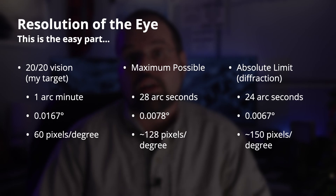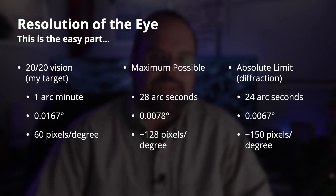20/20 vision — 60 pixels per degree — is not the upper limit; that's a normal visual level. Scientists and doctors have measured using laser interferometry that the best possible human vision is around 28 arc seconds — I'll round to 30 arc seconds. An arc second is a 60th of an arc minute, or 1/3600th of a degree. 30 arc seconds is half an arc minute. Translating to pixels per degree, that comes out to about 128 pixels per degree — basically twice the resolution of standard 20/20 vision.